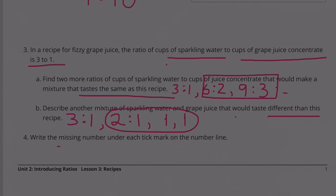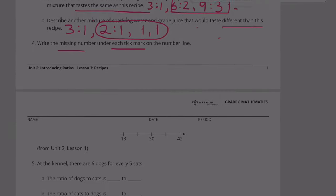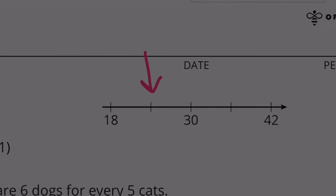Number four: Write the missing number under each tick mark on the number line. Here's the tick mark here and a tick mark here with a missing number. The numbers that they provided us, 18, 30, and 42, are identifying the distance between these tick marks. The difference between 18 and 30 is 12.